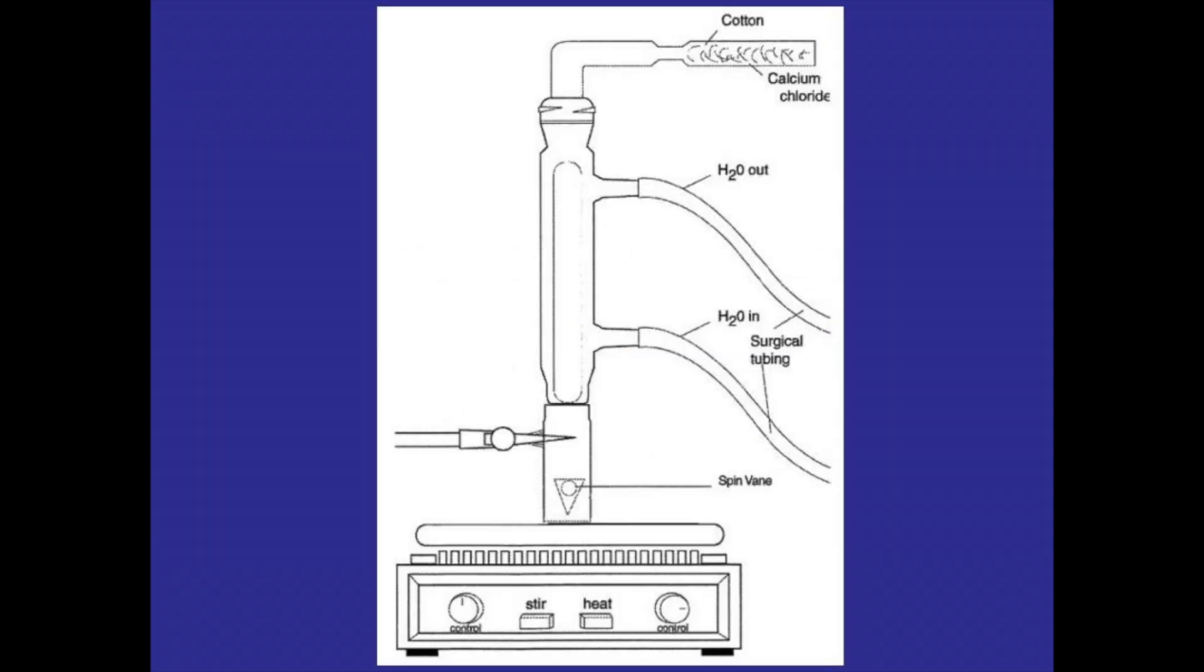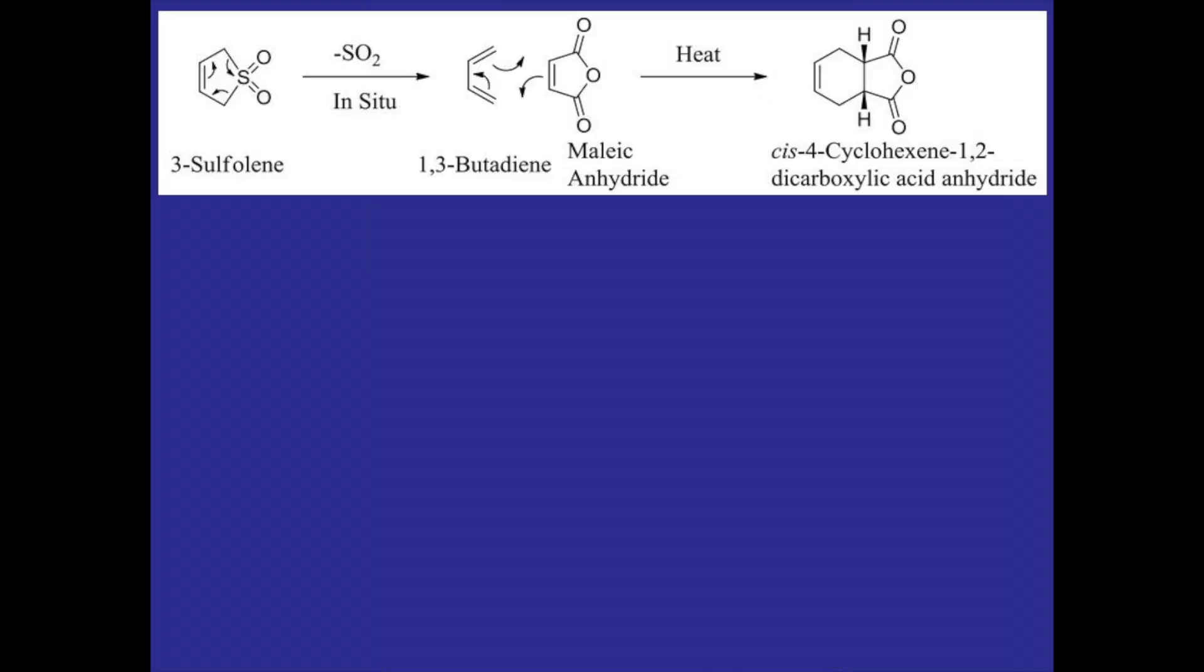So we can test the vapors coming off of the reaction by placing a pH paper moistened with some distilled water between the drying tube and the water condenser in the apparatus and it'll start turning a reddish pink indicating the presence of an acid. This helps confirm that 1,3-butadiene is being formed to react with the maleic anhydride.